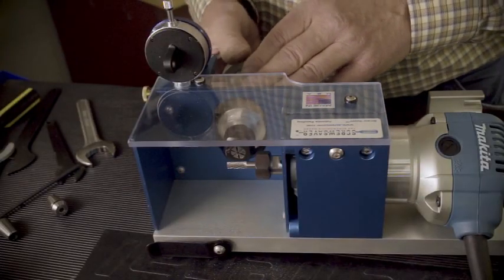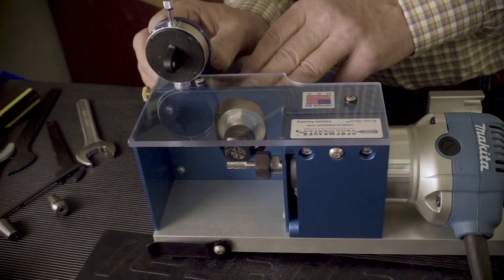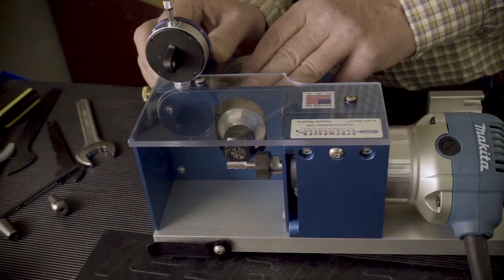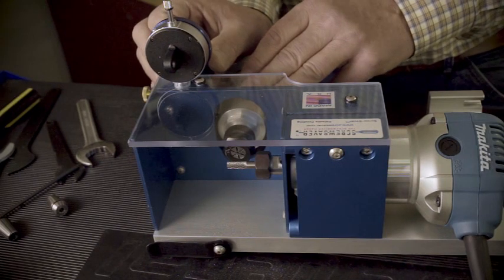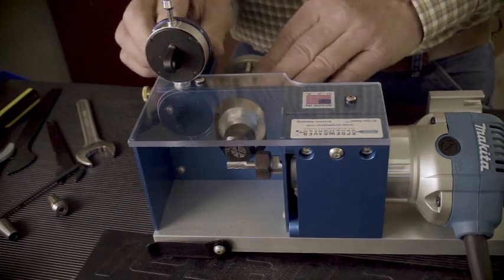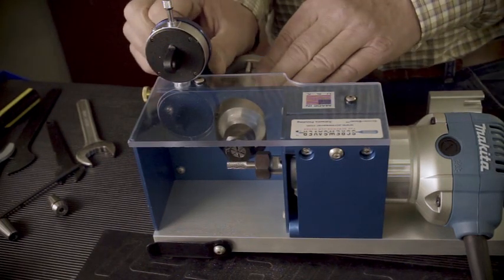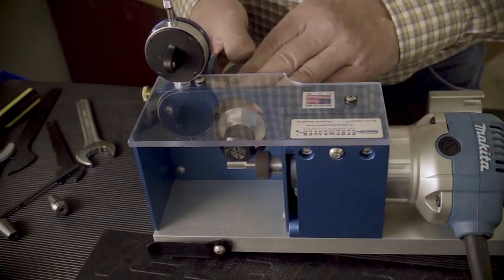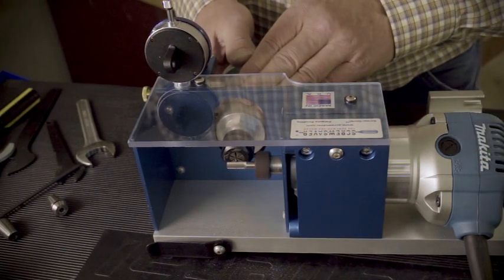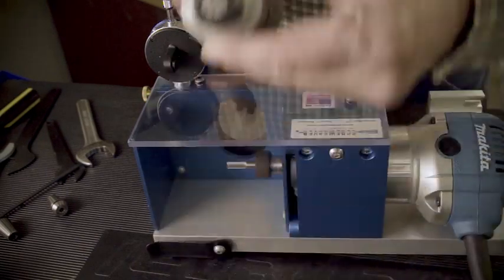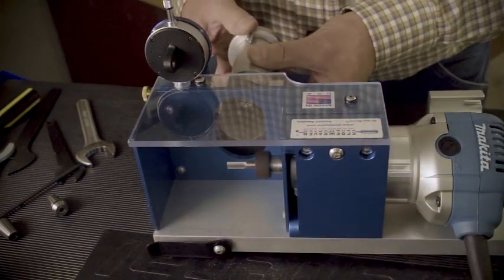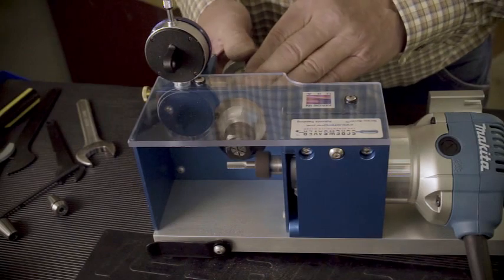Right now we are at ten thousandths on our blade, so we're done. Now we want to take some off the sides and make it twenty thousandths, so we're going to raise it back up and I'll start right there. This time we have it oriented vertically this way by putting it in - we're using the slot on the bottom. Okay.